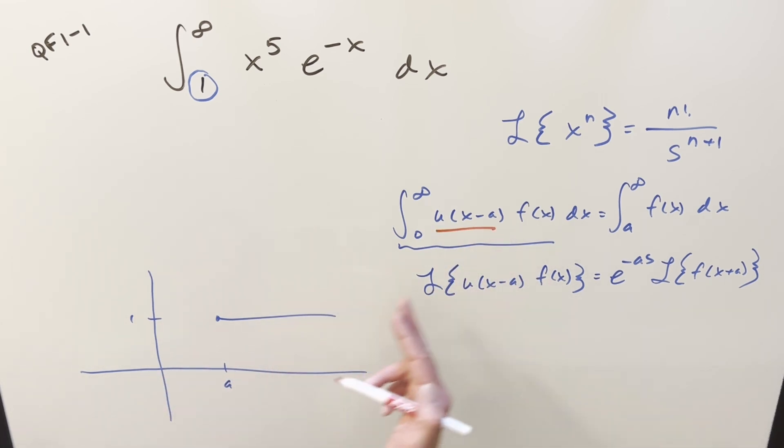So if this thing's our unit step function here, when you multiply in a function like this onto another function, everything to the left is going to get zeroed out, and everything multiplying by 1, everything to the right is going to be the same. So it has this effect of putting our integral back to 0, where we can use the Laplace transform, but at the same time we haven't changed it.